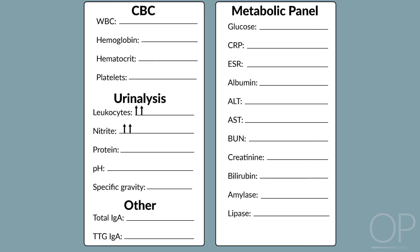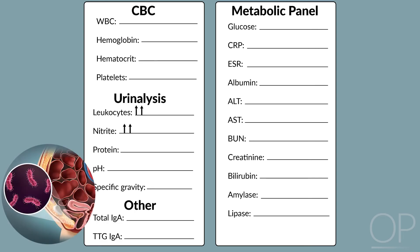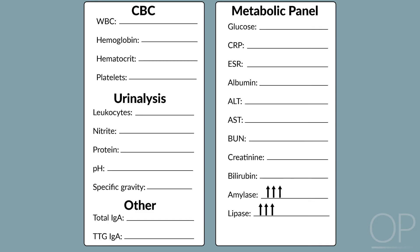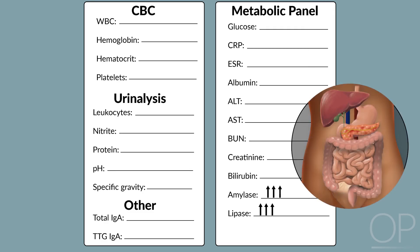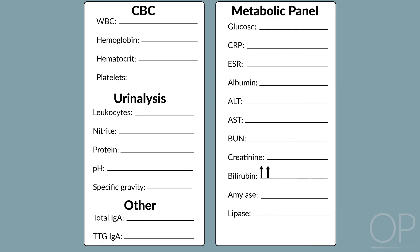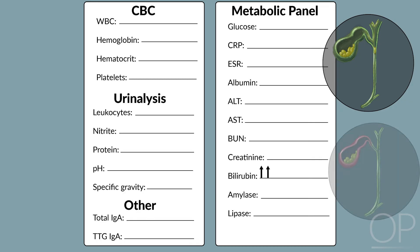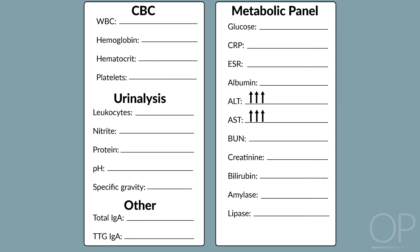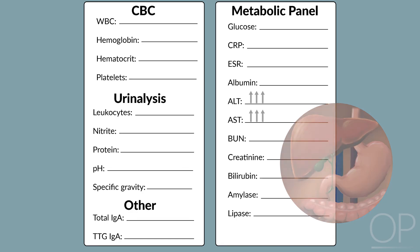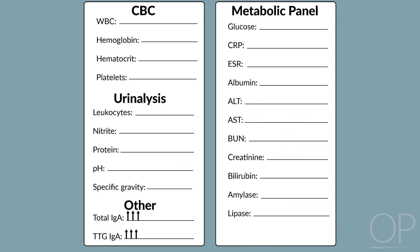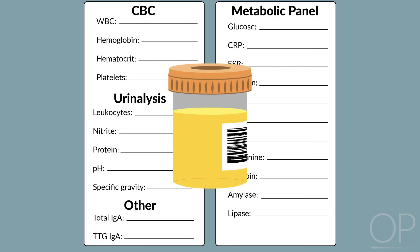Urinalysis demonstrating pyuria or bacteria signifies urinary tract infection. Pancreatic enzymes elevated three times above the upper limit of normal is part of the diagnostic criteria for pancreatitis. Bilirubin is likely to be elevated with acute biliary obstruction or cholecystitis. Transaminase elevation raises concern for acute hepatitis. IgA antibodies against tissue transglutaminase performed while on a gluten-containing diet are the most reliable screening test for celiac disease. Post-menarchal females should undergo urine pregnancy testing to evaluate for ectopic pregnancy.